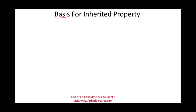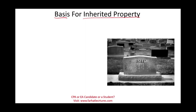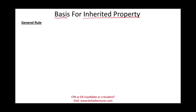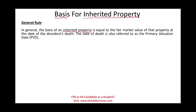Welcome to this session on basis for inherited property. Inherited property is a form of a gift, although we cover gift property separately — this gift is coming from someone who has already passed away. Somebody passed away and left you an asset. The general rule is that the basis of inherited property equals the fair market value of that property at the date of the decedent's death, so the day the person passed away, we look at the fair market value and that is usually your basis.